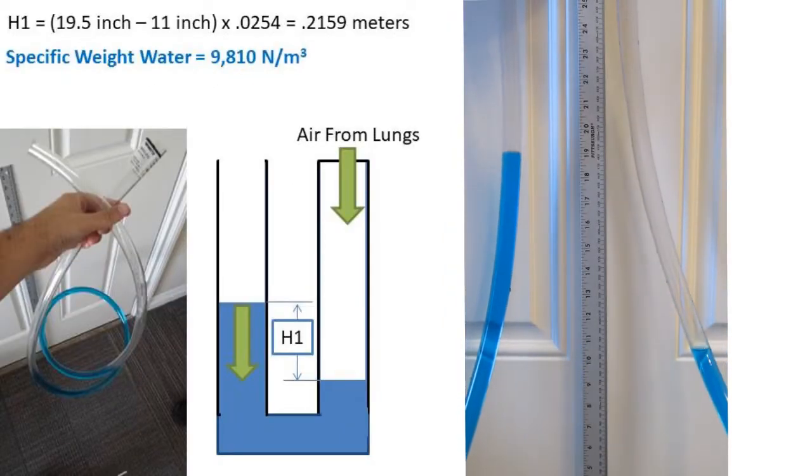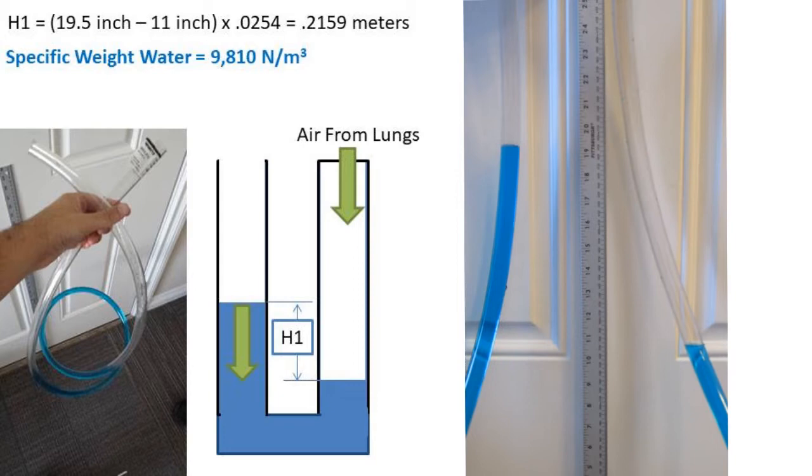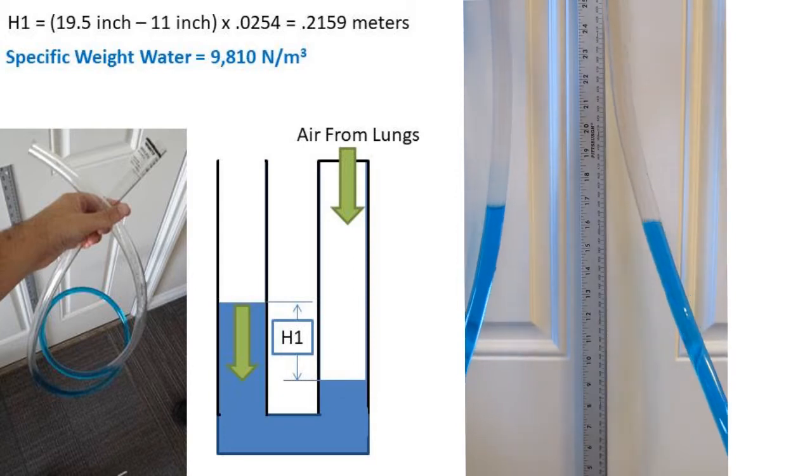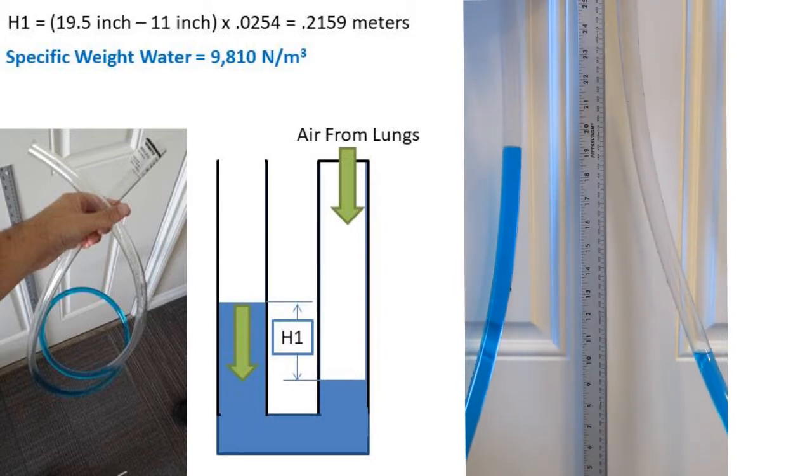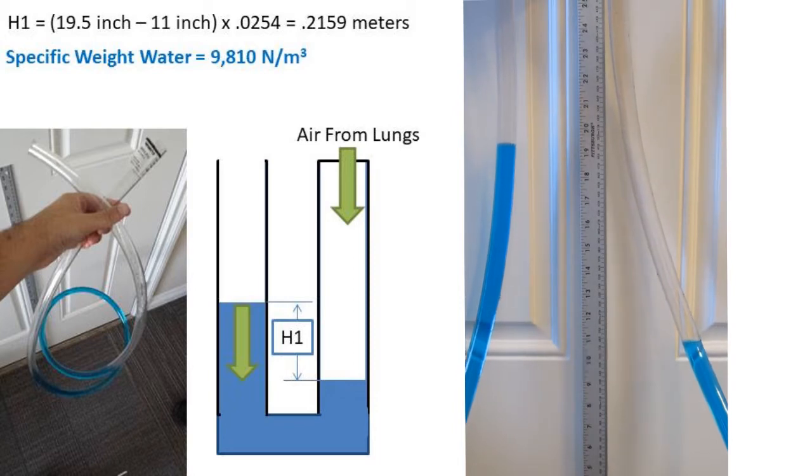Looking at the video, we have the end open to the atmosphere with a height of 19.5 inches and the height at the end I blew into of 11 inches. If we take the difference and convert to meters, we get 0.2159 meters.